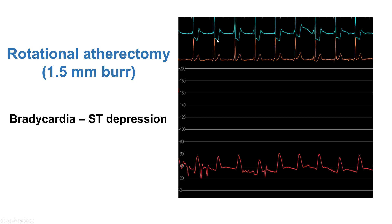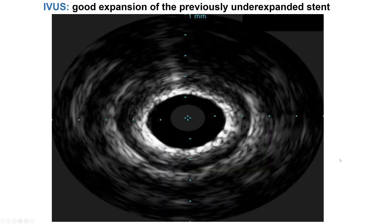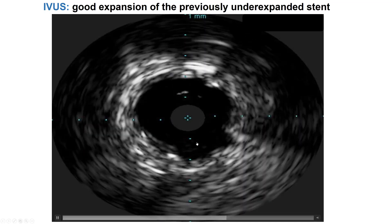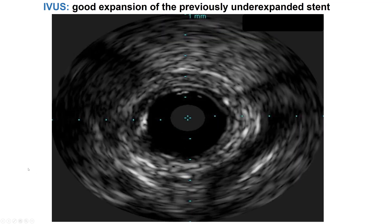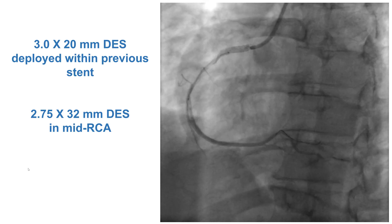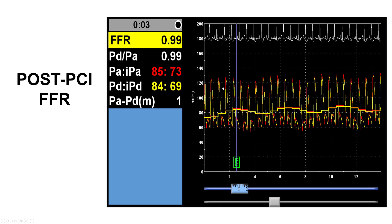Unfortunately, the laser did not work. After multiple attempts, we decided to do rotational atherectomy. This was done with a 1.5 mm burr. The patient did have some bradycardia, ST segment depressions, and hypotension. However, afterwards the patient recovered, and repeated intravascular ultrasound showed that we finally achieved expansion of the formerly under-expanded stent. Of course, the stent was disrupted with some disruption further distally, so we had to place additional drug-eluting stents to cover a larger portion of the right coronary artery.